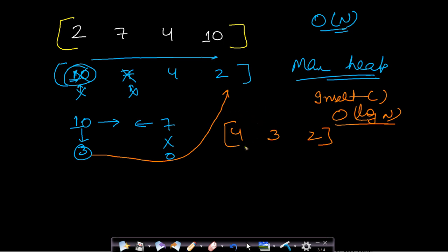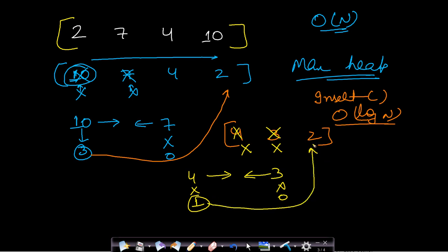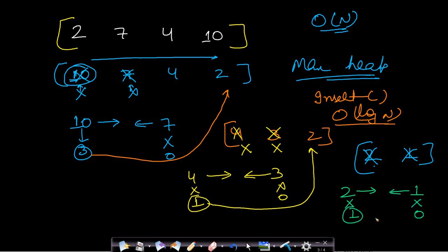Now we take the two heaviest weights — 4 and 3 — smash them, and are left with weight 1, which gets pushed back. The heap now contains [2, 1]. We take out 2 and 1, smash them — weight 1 remains and weight 0 is discarded — so 1 is inserted. Now only one element remains in the heap, so we return its weight: 1.